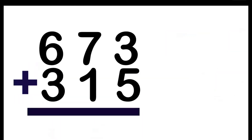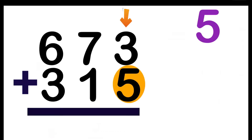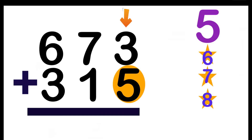How about if we have 673 plus 315? Again, we are going to start from the 1's place. 3 plus 5 — let's look at the big number. 5 on our mind: 5, 6, 7, 8. So, 3 plus 5 is equal to 8.